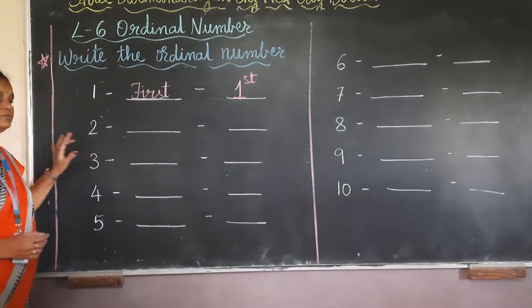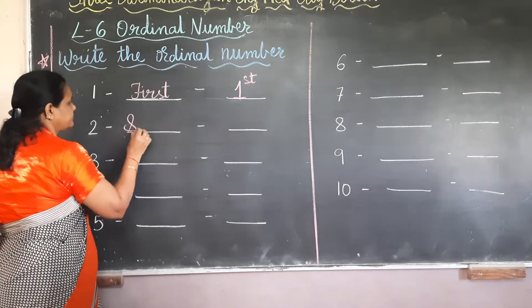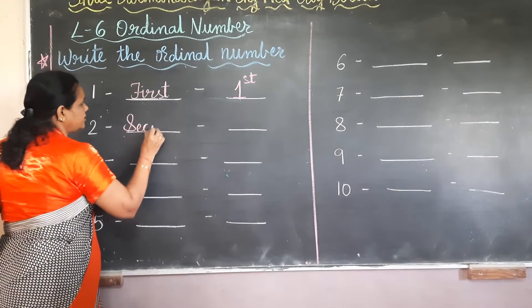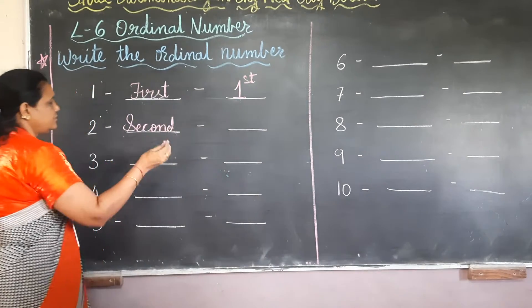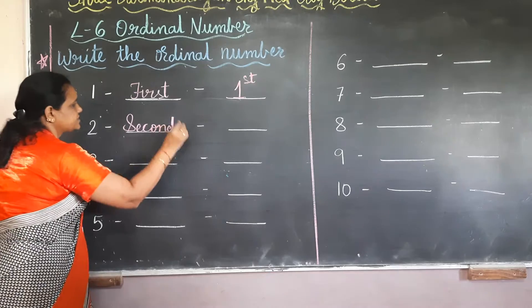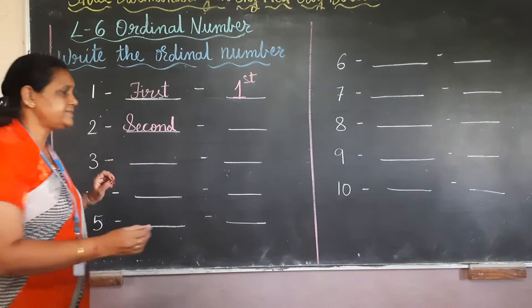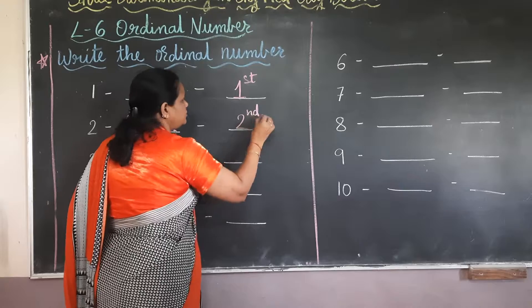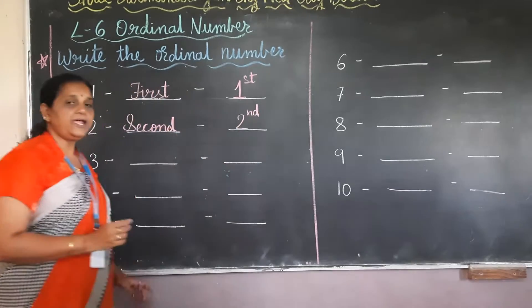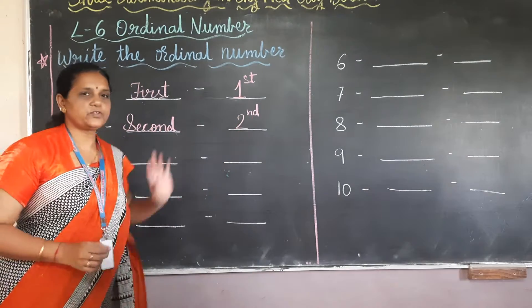For 2, we say 2nd — I got the 2nd position. Now, how to write 2nd in the short form: 2 and ND, meaning 2nd.